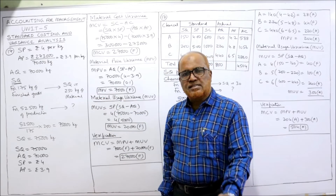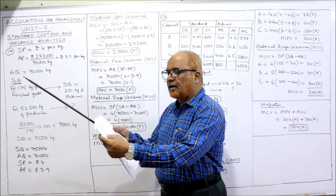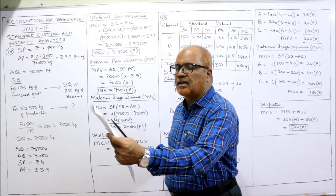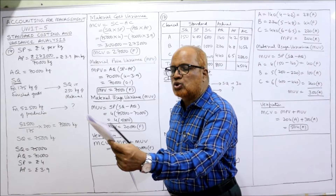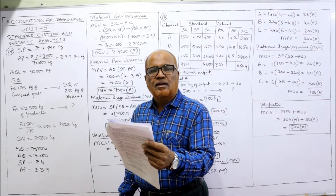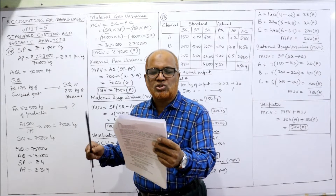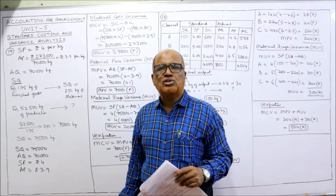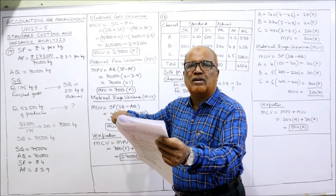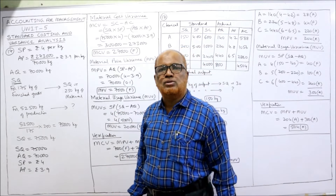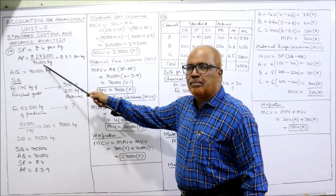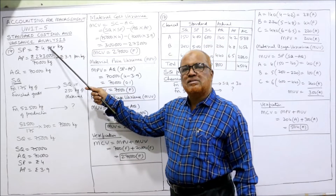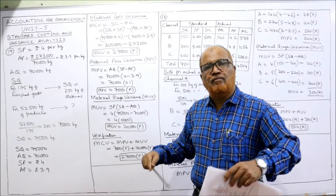Standard price is directly given in the problem: 4 rupees per kilogram. Actual price is not given directly. However, the actual cost of material is 2,73,000 rupees and material consumed is 70,000 kilogram. So actual price equals 2,73,000 divided by 70,000, which gives 3.9 rupees per kilogram. Standard price is 4 rupees given; actual price 3.9 we have calculated by dividing total cost by quantity purchased.